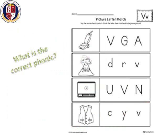Have a little look at the pictures and see if you can say the correct phonic. Let's have a look at the first one — correct, a vacuum. Does vacuum start with v, g, or a? Well done, it starts with v. Second picture — well done, a volcano. Does volcano start with d, r, or v? Correct, it starts with v.